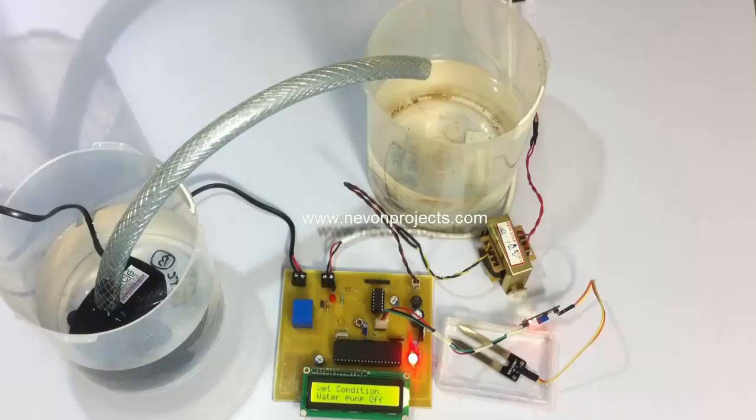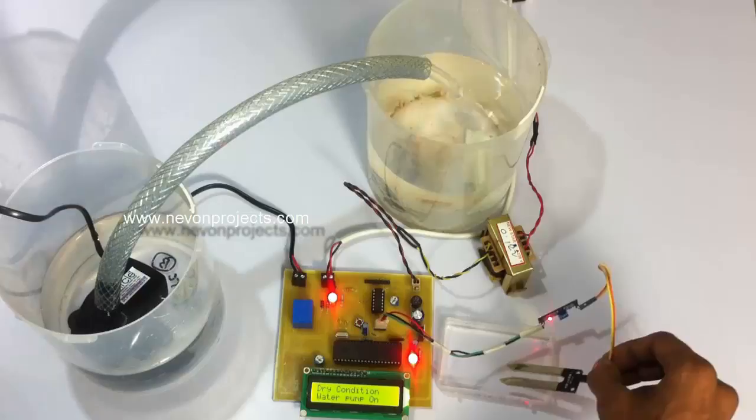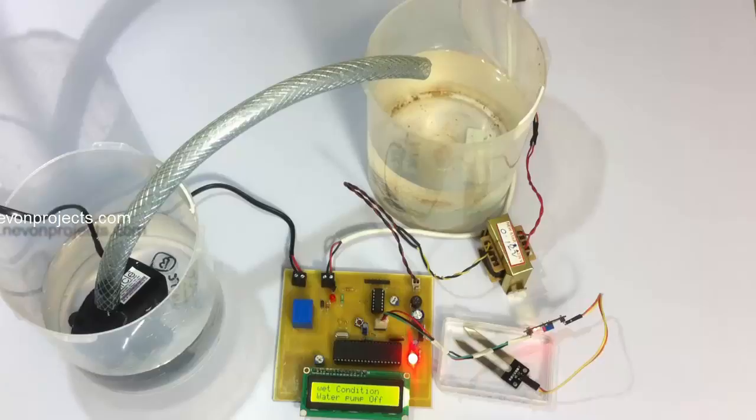Let's check it once again. As you can see, the system automatically provides the irrigation facility at the field by checking the moisture content without any intervention by a human. This is how the project works. Thank you.